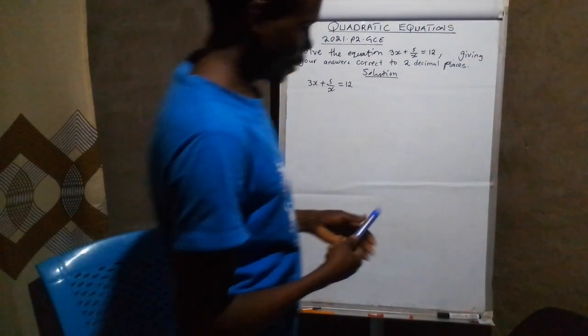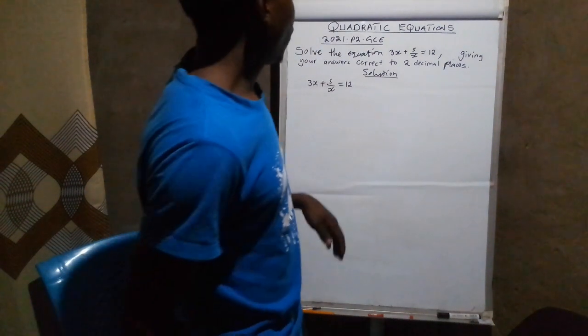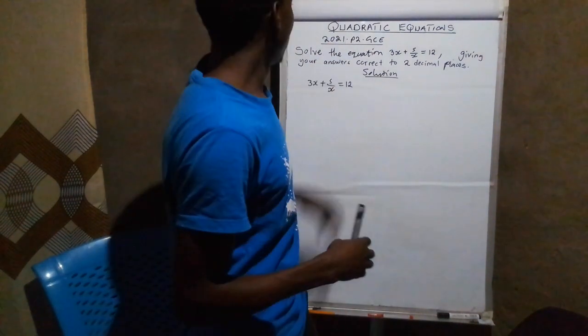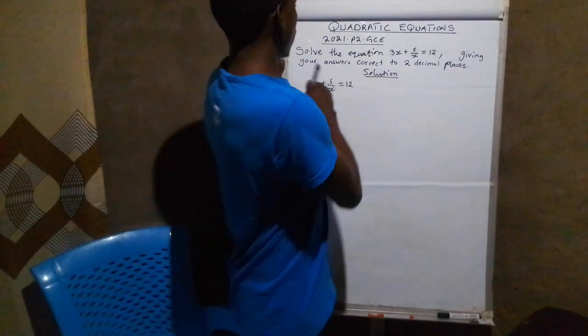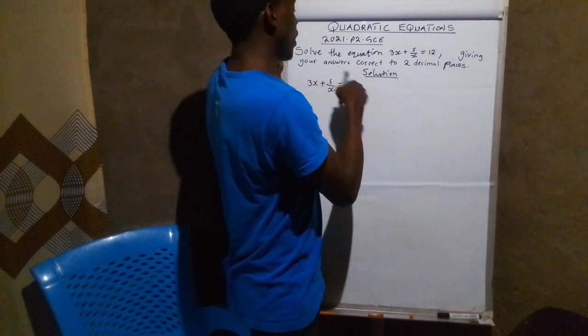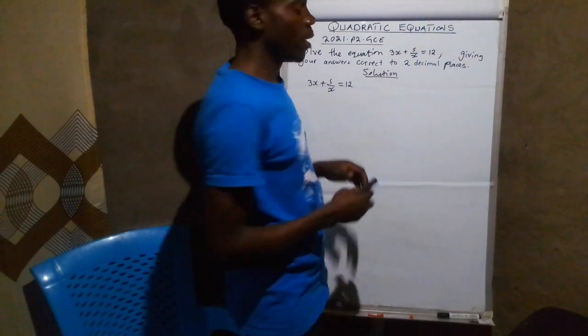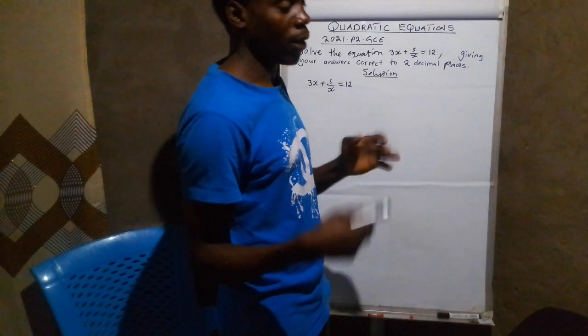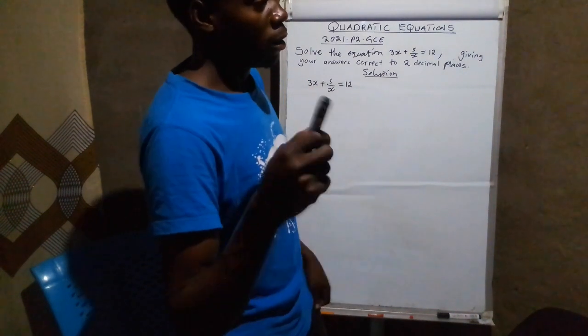This is quadratic equation. Under quadratic equation, we are going to look at the equation which came in 2021, the WAEC. The question reads: solve the equation 3x plus 5 over x is equal to 4, giving your answers correctly to two decimal places. That means that we are going to have two different answers, and our answers must be rounded to two decimal places.